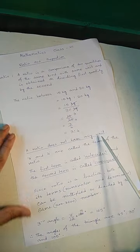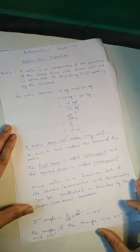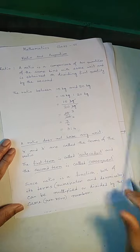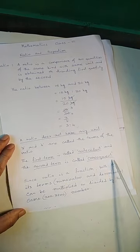So ratio does not have any unit. 3 and 4 are called the terms of the ratio. The first term is called antecedent and the second term is called consequent.